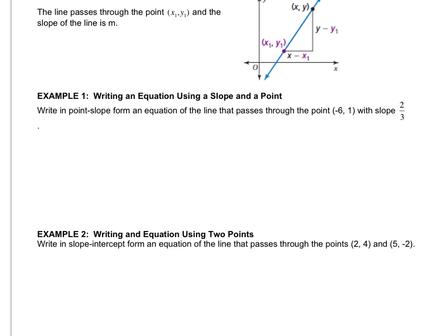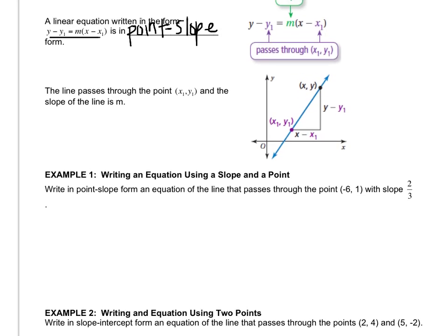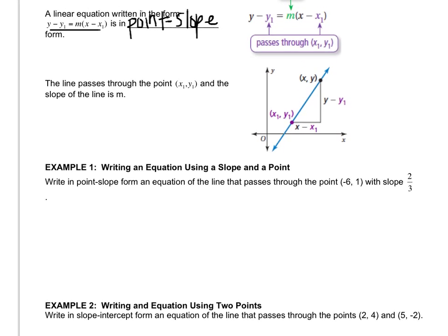In example 1, we have to write in point-slope form an equation of the line that passes through the point (-6, 1) with a slope of 2/3. So first thing I'm going to do is write the formula first. Anytime you have a question and you have a formula, you should always write the formula first before you plug in anything. So now this is x₁, this is y₁, and this goes in for m. So now it's just a question of plugging in my values into the formula.